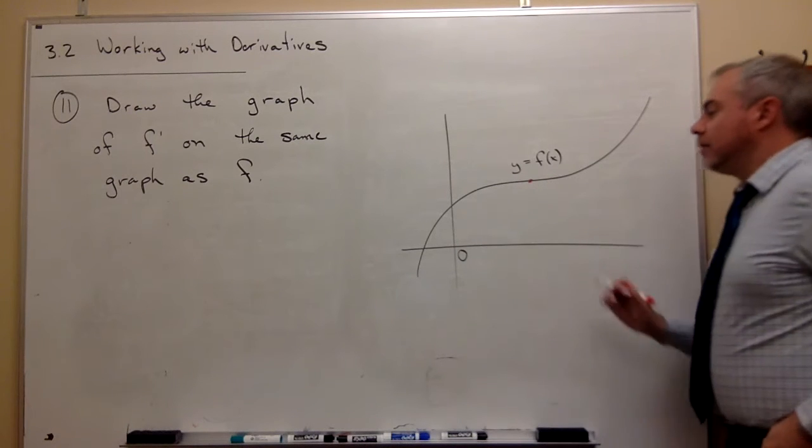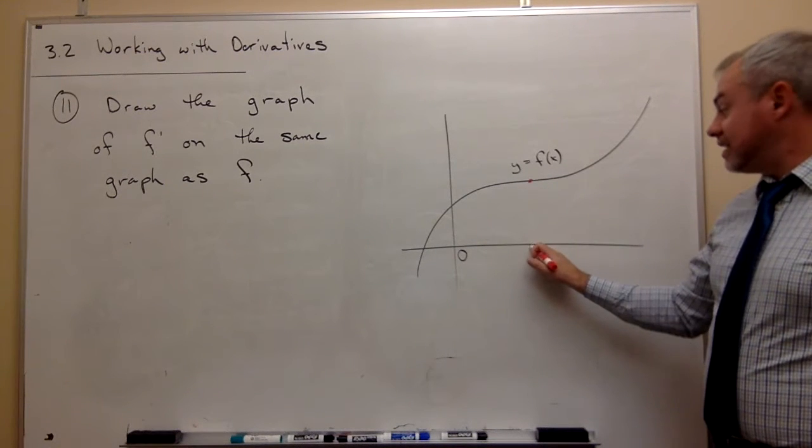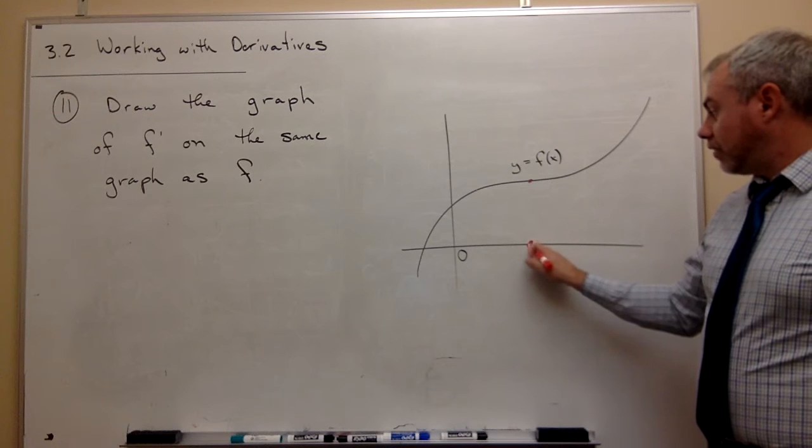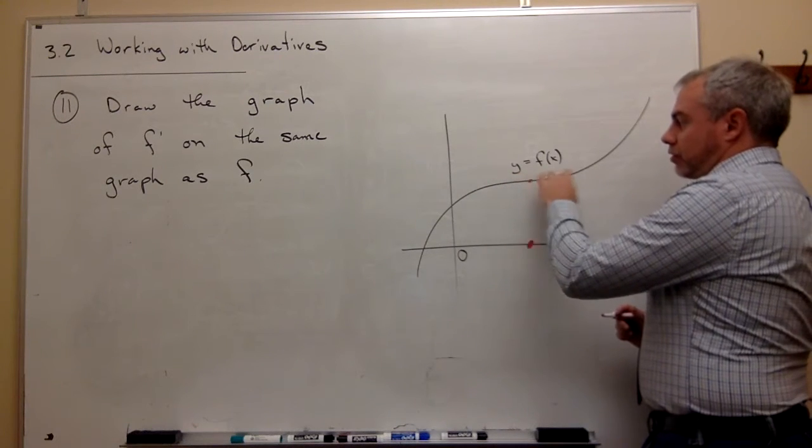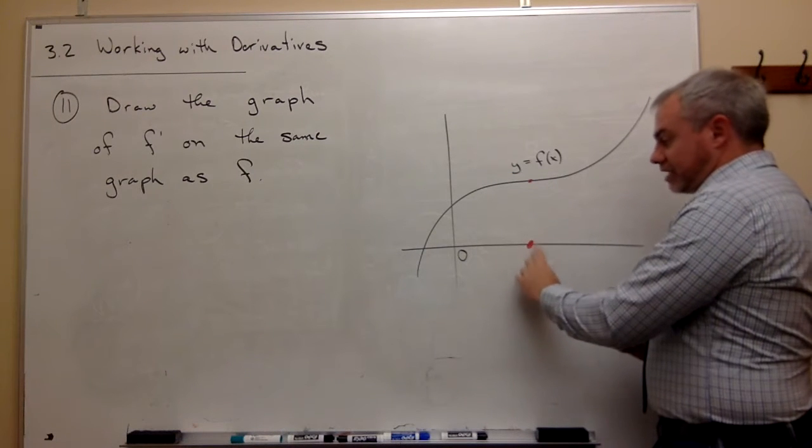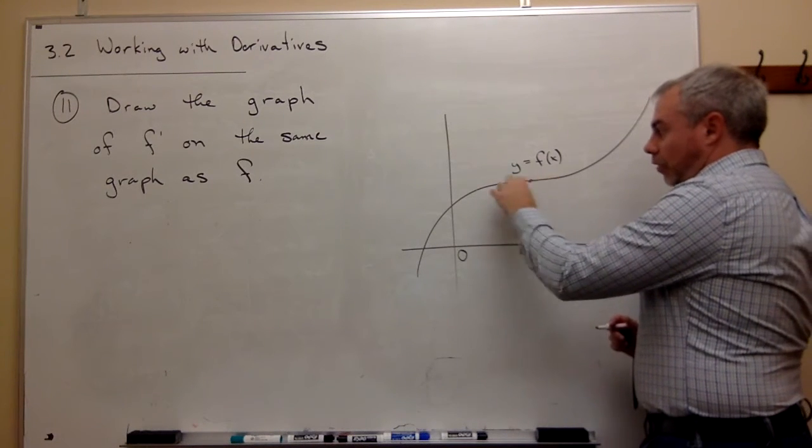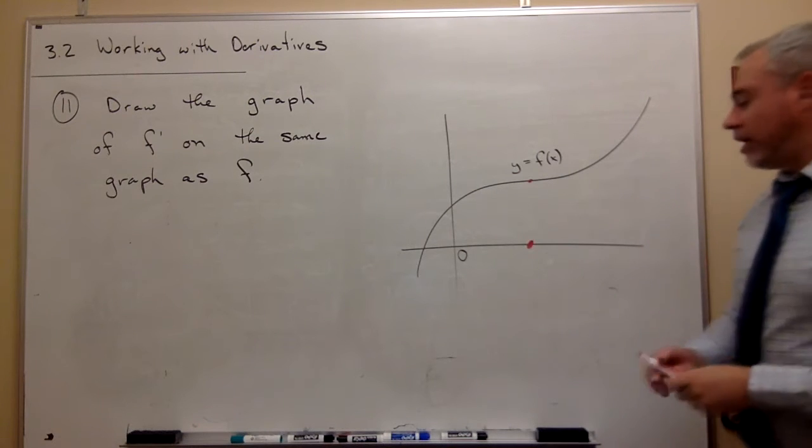But that means that the derivative actually is zero at that point. So since I have a slope that's horizontal right there, the derivative value is zero because the slope of the function is zero.